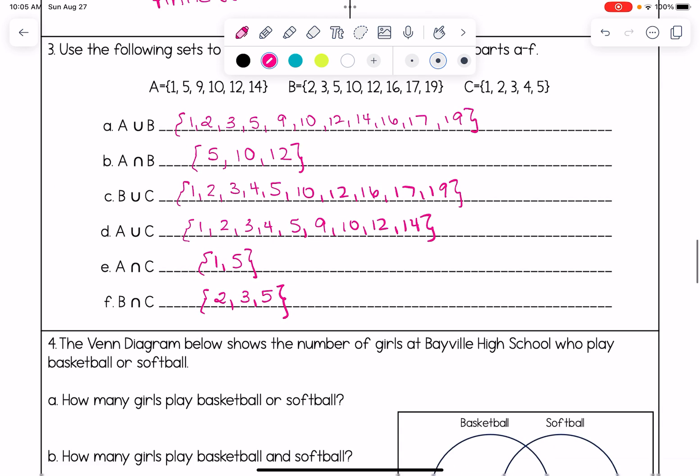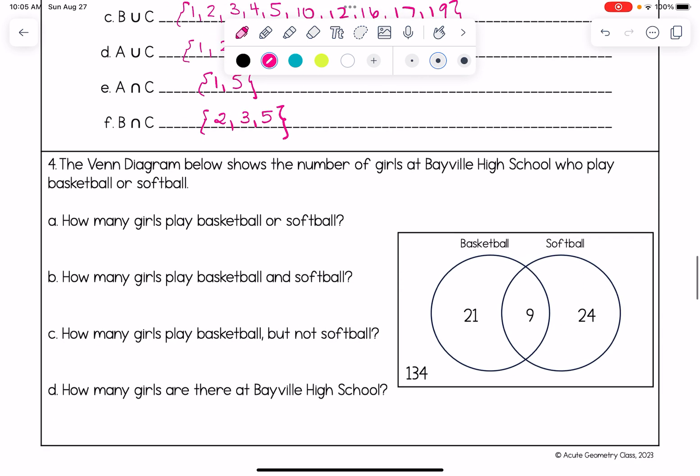All right one last sample problem everybody. Number four, the Venn diagram below shows the number of girls at Bayville High School who play basketball or softball. First it says how many girls play basketball or softball. That's when we are combining all of the elements of both. So that's like us finding the sum of these values here. So that's really 21 plus 9 plus 24. So there are 54 girls who play basketball or softball.